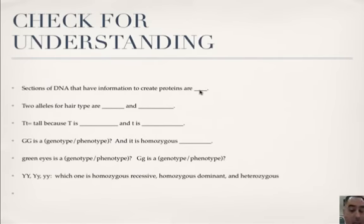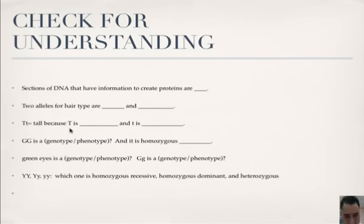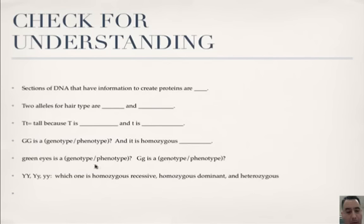Sections of DNA that have information to create proteins are genes. Two alleles for hair type are wavy hair and curly hair. Big T and little t still comes out tall because big T is dominant and little t is recessive. Big G and big G is a genotype — that's an allele combination — and it is homozygous dominant. Green eyes is a phenotype because we're talking about physical appearance. Big G, little g is a genotype. The three types are: homozygous dominant, heterozygous, and homozygous recessive.